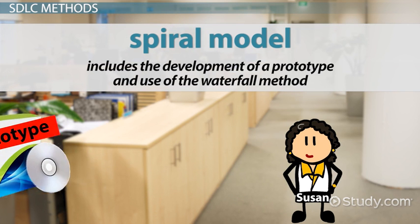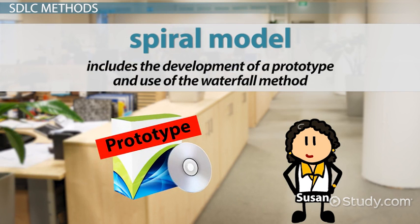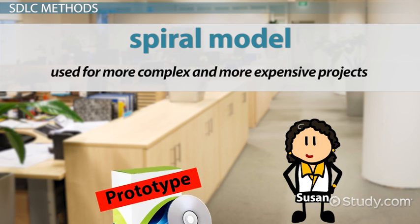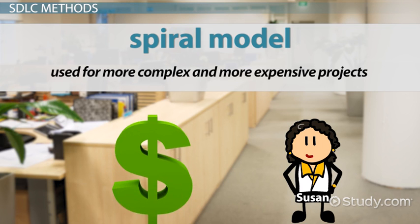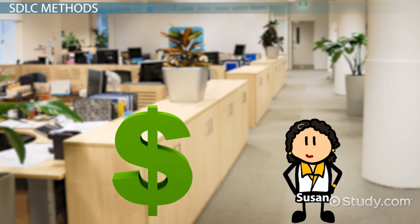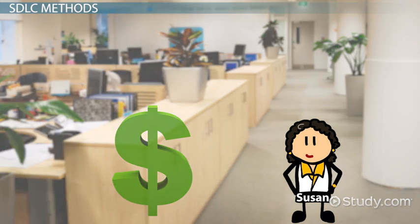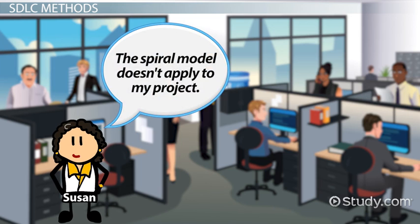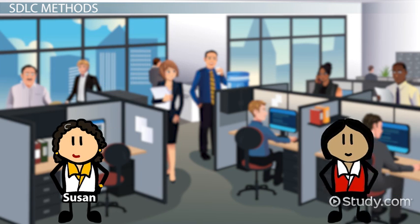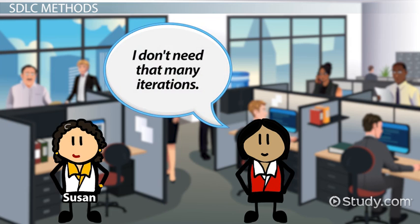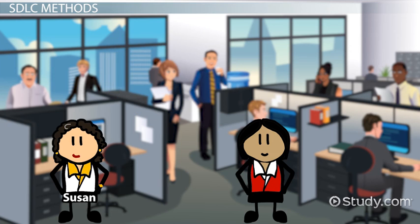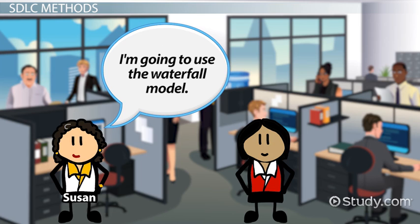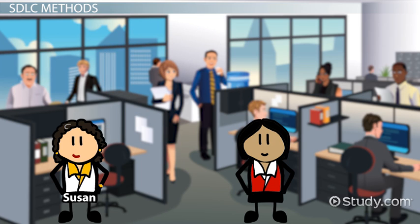The Spiral model includes the development of a prototype and use of the Waterfall method. The Spiral model is used for more complex and more expensive projects, in which a prototype is necessary to begin implementation. Susan decides the Spiral model does not apply to her project because a prototype does not meet her customer's requirements. The Iterative model would provide too many versions of the software, and the customer does not require these iterations. Susan decides to use the Waterfall model, which means that each phase of the SDLC must be completed before the project team works on the next phase.